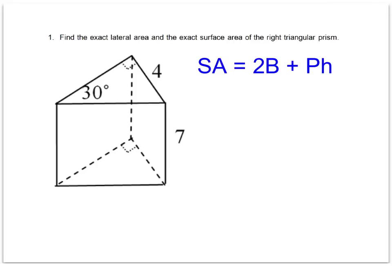In this video, Practice Problem 2, we're asked to find the exact lateral area and the exact surface area of a right triangular prism. I'm going to start out like I always do with the formula. Even though this is a triangular prism, it is still a prism, and so the formula is surface area equals 2B plus Ph.